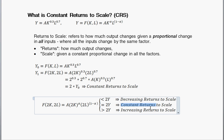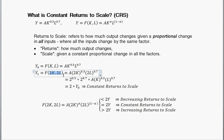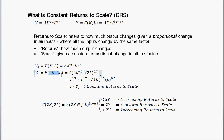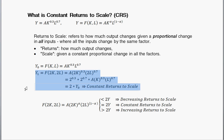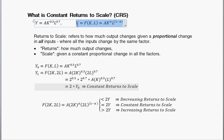Constant returns to scale. The other options could be decreasing returns to scale, where if we double the inputs we get less than double the output. Increasing returns to scale refers to when we double the inputs, we get more than double the output. Sometimes you'll be asked to solve this slightly differently — rather than giving a specific doubling number, you'll be asked to use some kind of scaling factor. So I'm going to do another example with that scaling factor.